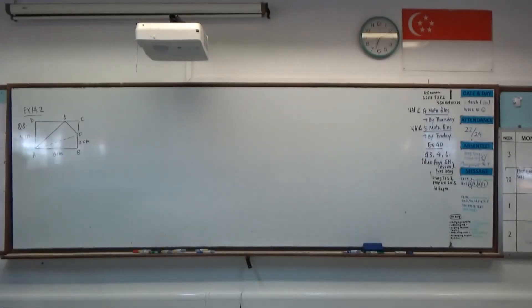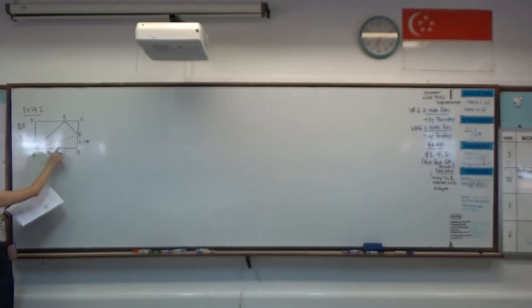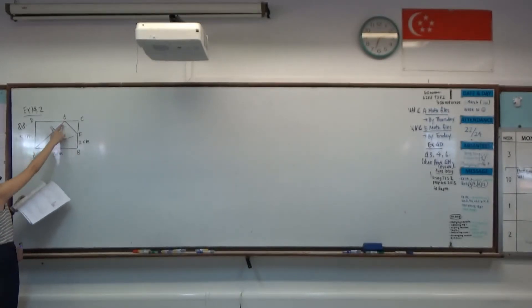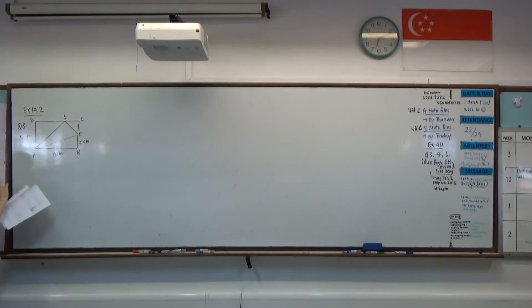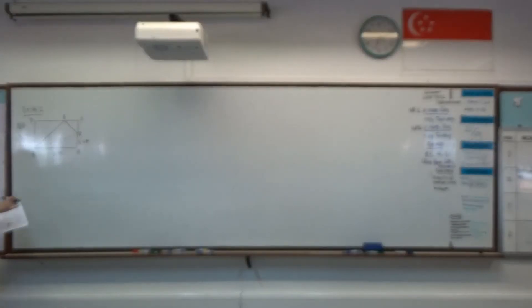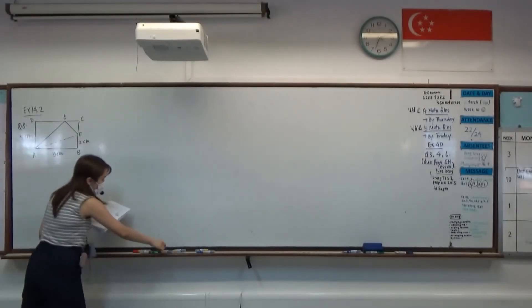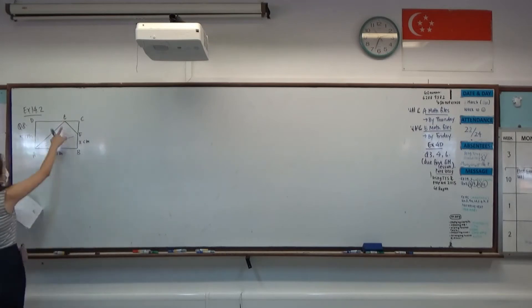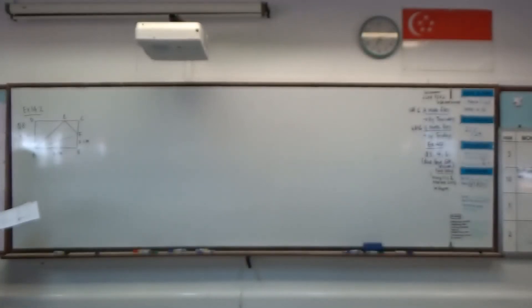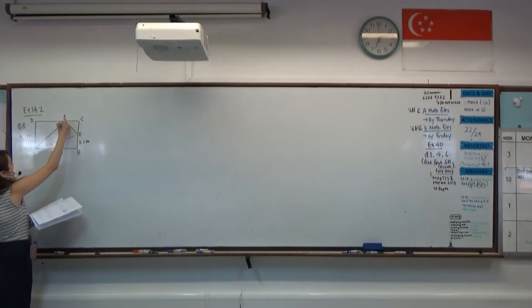Paper is folded along AF, the dotted line, such that B actually meets E on DC. So that will mean that if you fold the paper this way, what can you say about this angle over here, angle AEF? It will have to be 90 degrees, right?